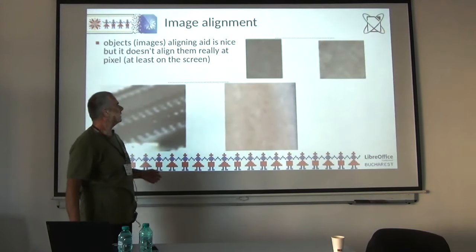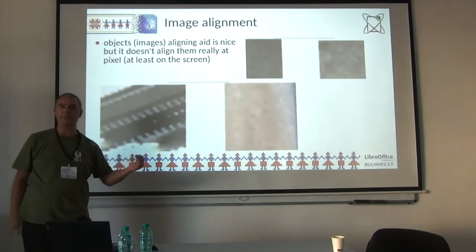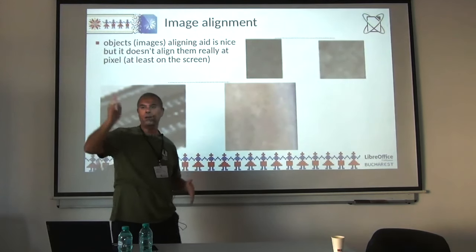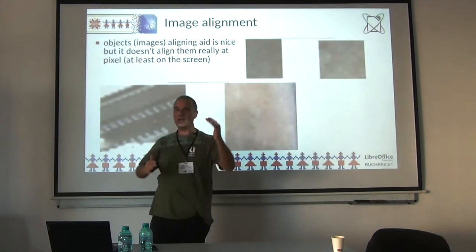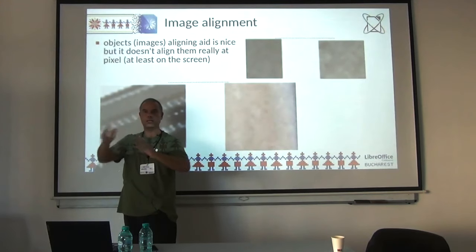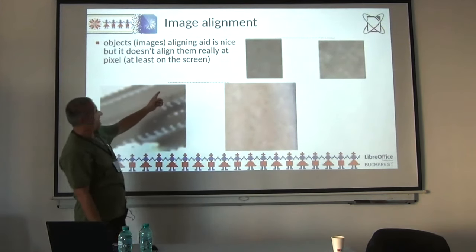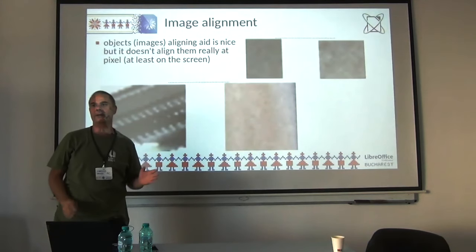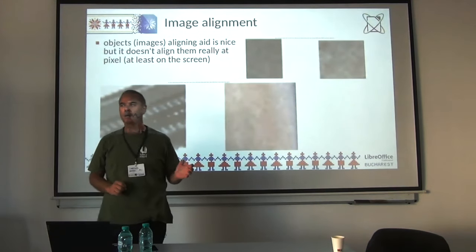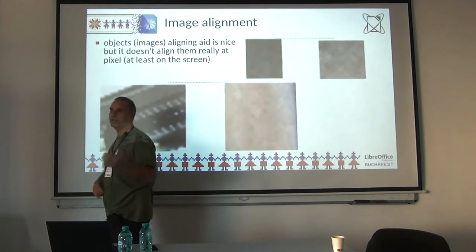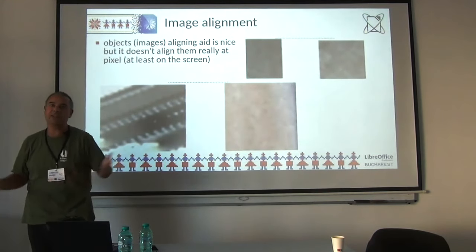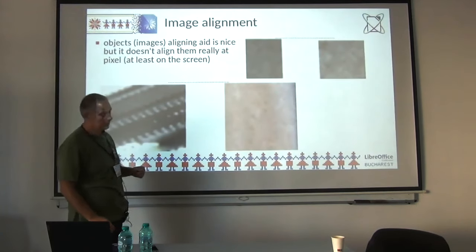Then alignment: there is alignment assistance for images in Word — it draws a green line which helps you to align images. But the final result is not that perfect, at least on screen. I didn't check the print result because I have not reached the stage of finishing the document to assemble it and produce the PDF, so I don't know about the final version.